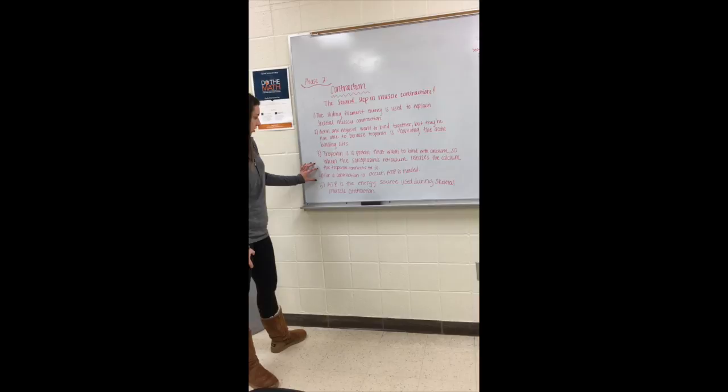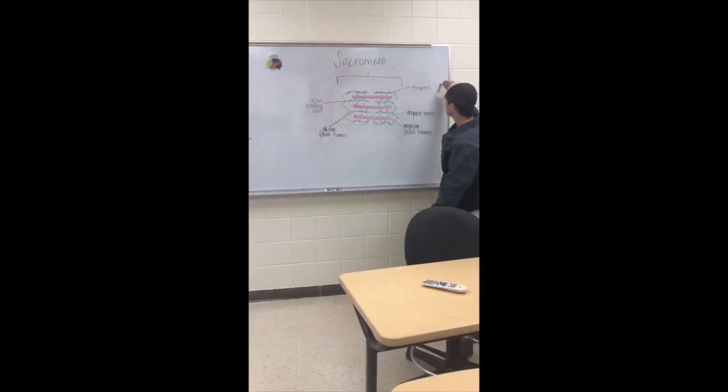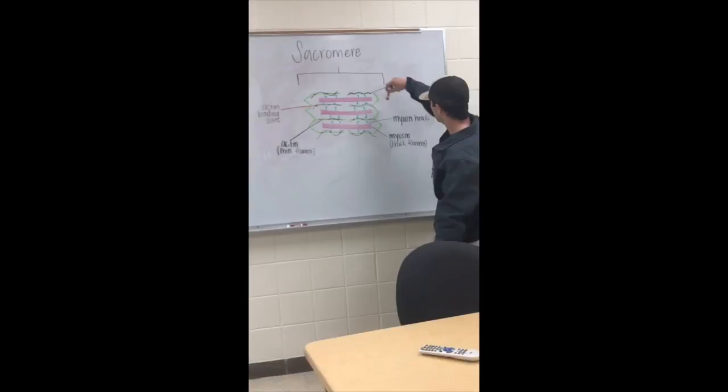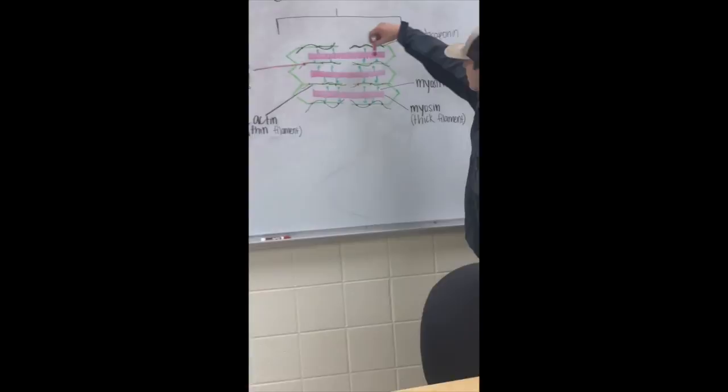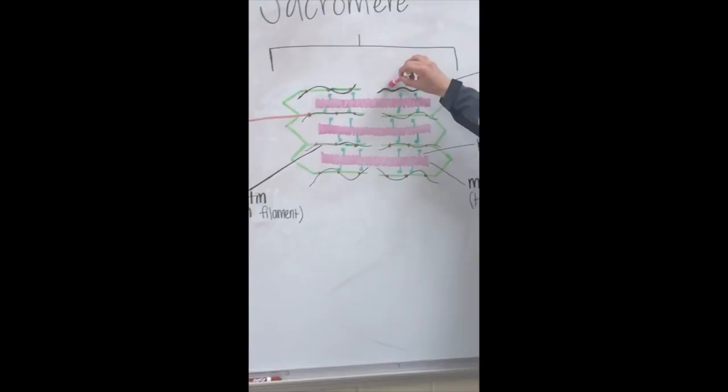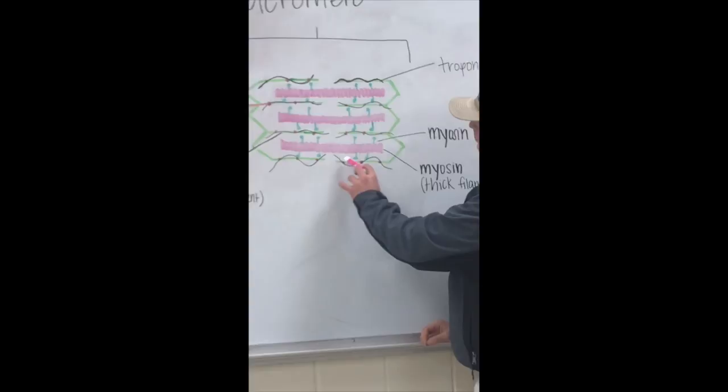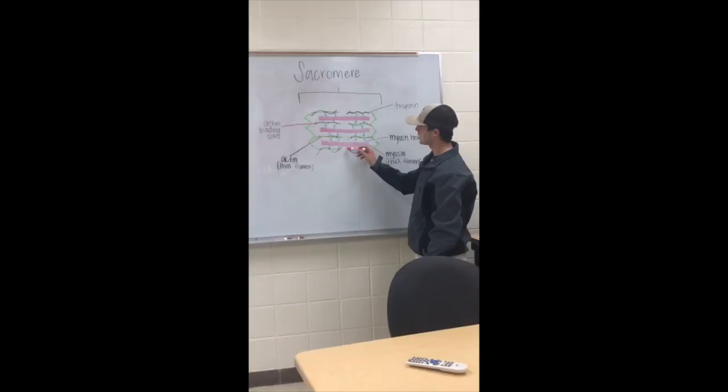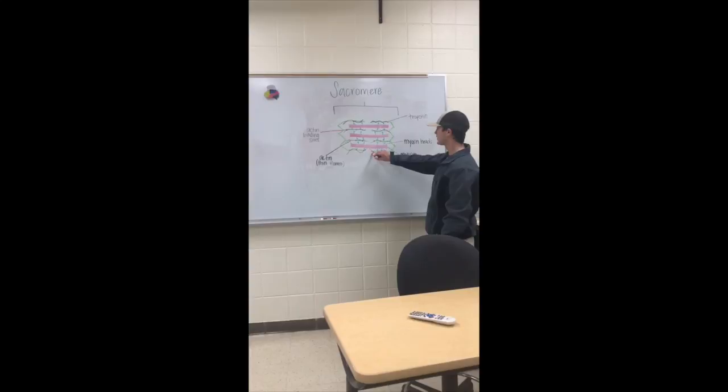Once the contraction is about to occur, ATP is needed. What you see here is the inside of a sarcomere, and we're going to use this to describe how the sliding filament theory works. The pink is the myosin — the thick filament — and their heads are right here. The actin would be the green lines, and their binding sites would be the brown spots. The black going across is the protein troponin; since calcium has not yet been released, they are covering the actin binding sites.